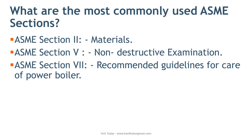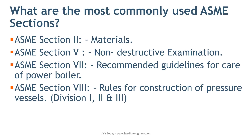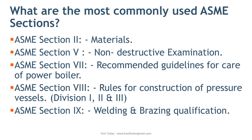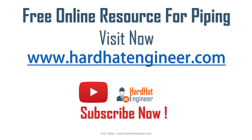Section 8 has three divisions that cover rules for construction of pressure vessels used in industries. Division 1 covers rules for construction of pressure vessels. Division 2 covers alternative rules. Division 3 covers alternative rules for construction of high-pressure vessels. Section 9 is used to establish welding procedures — i.e., WPS — and welder qualification requirements. In the next video, I will explain material and dimensional codes and standards for piping components.